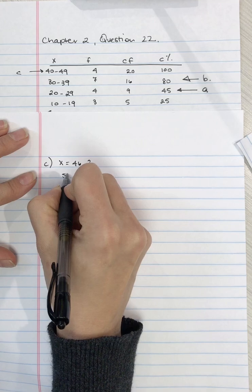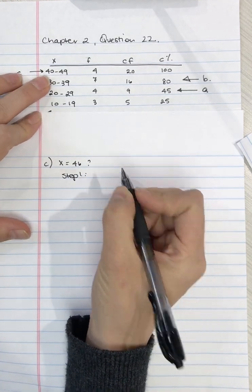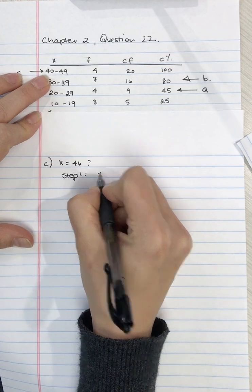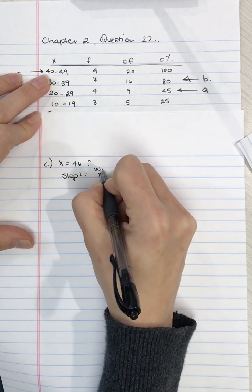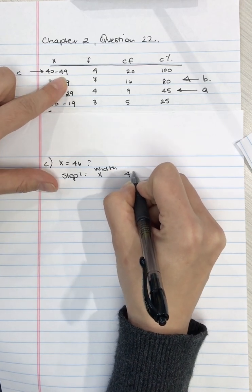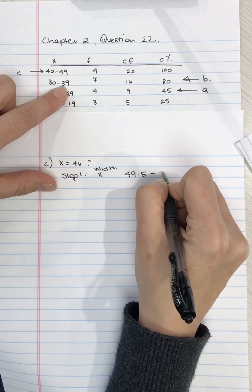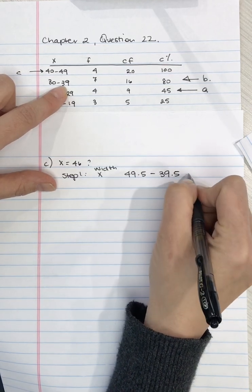So step one we find the width. We take for X the upper real limit 49.5 minus the lower real limit 39.5 and we get 10.